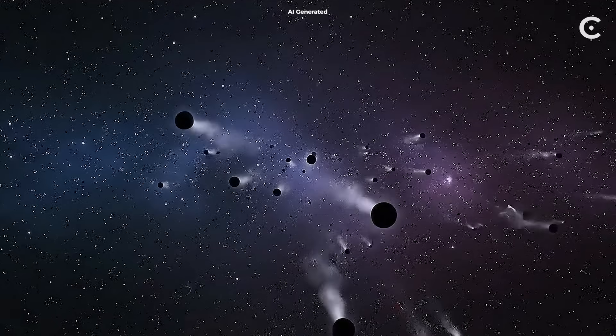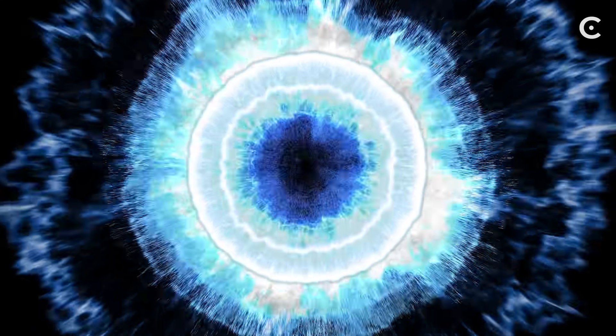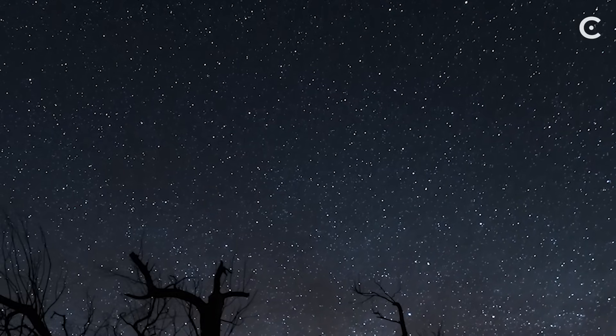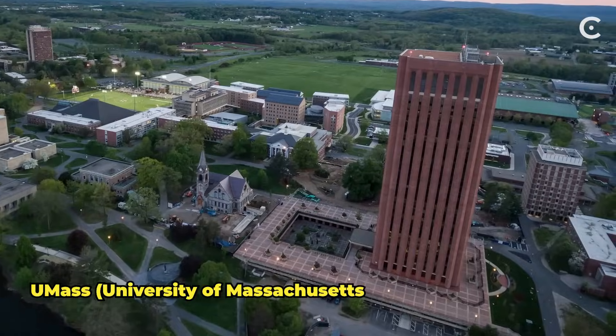Stephen Hawking predicted black holes slowly evaporate through radiation. At the very end, boom, a massive burst of gamma rays. Until last month, scientists thought we'd wait 100,000 years to see one. But researchers at UMass just changed the game.